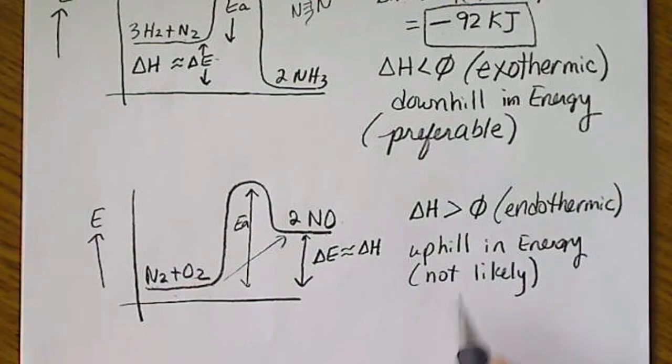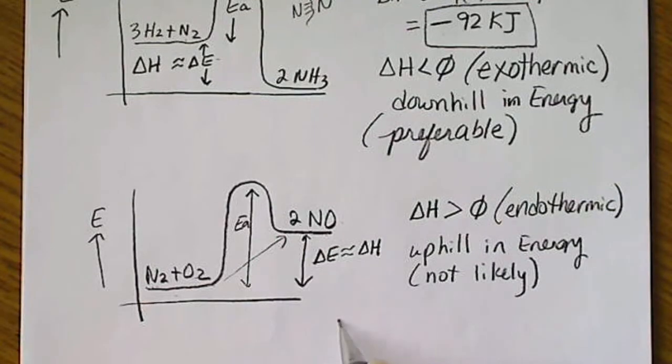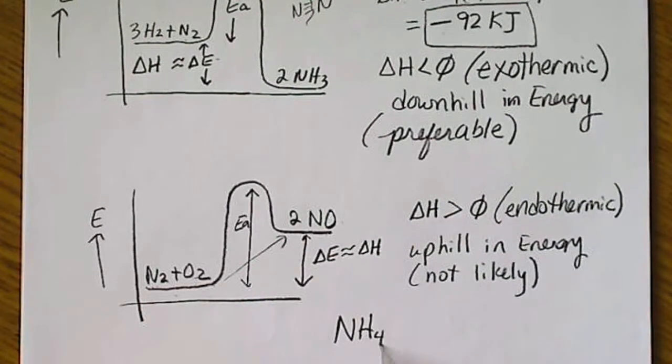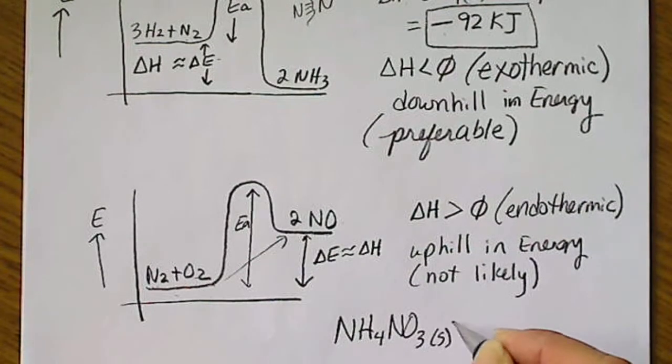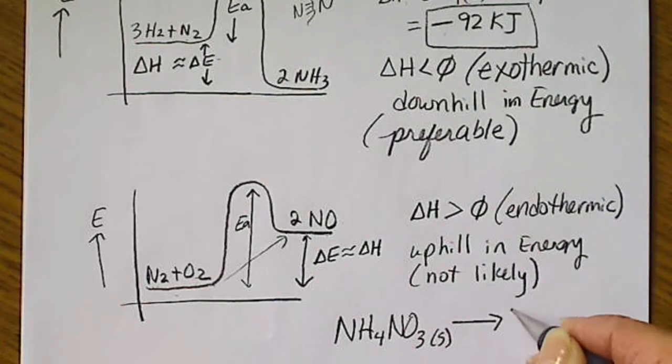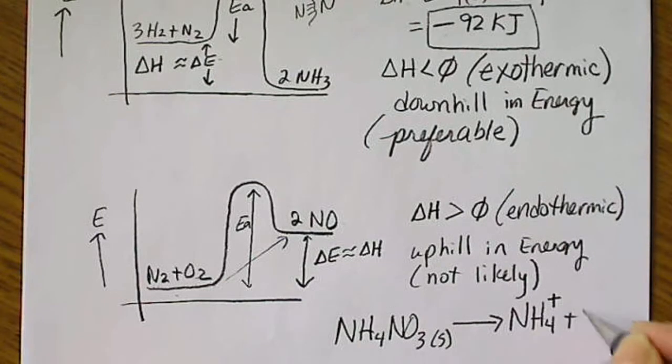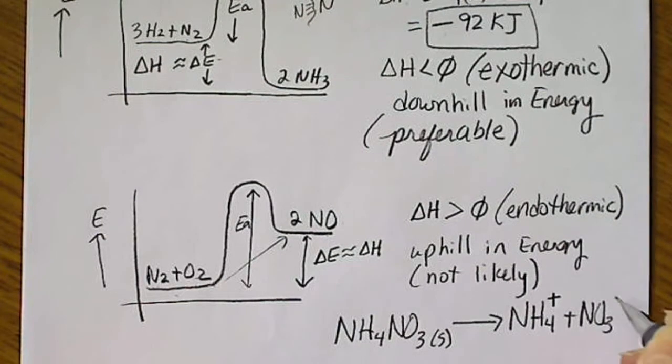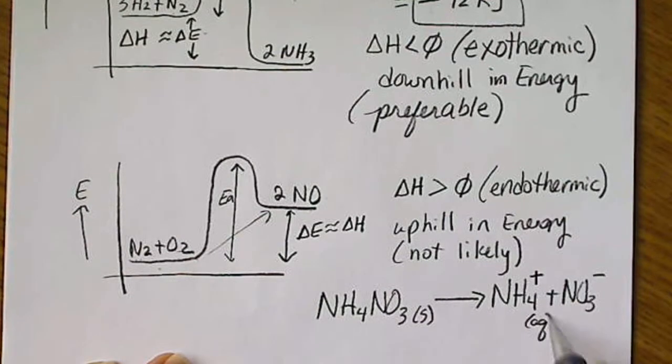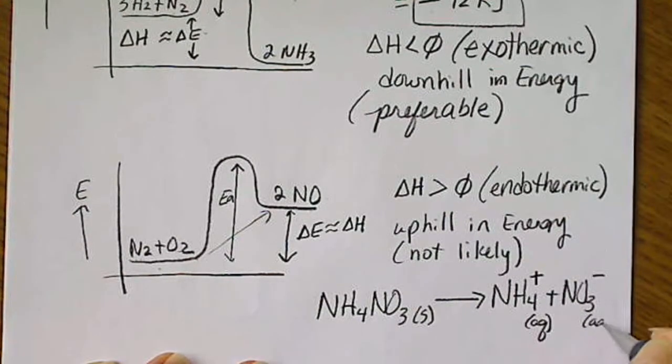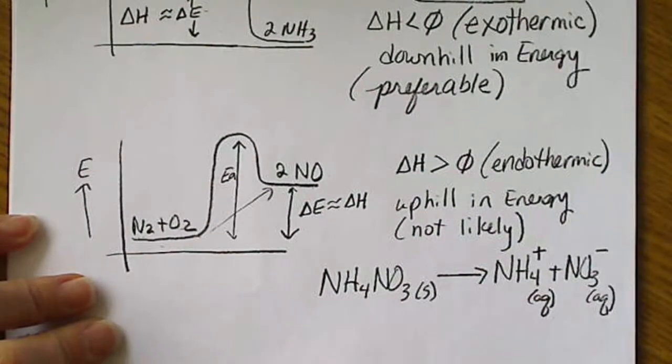The most common example I can think of for an endothermic reaction is if we take solid ammonium nitrate and put it in water. And this is what's in an ice pack. So when this dissolves, it actually absorbs heat from our arm or wherever we place the ice pack. Most of the time when we dissolve a solid, it gives off.